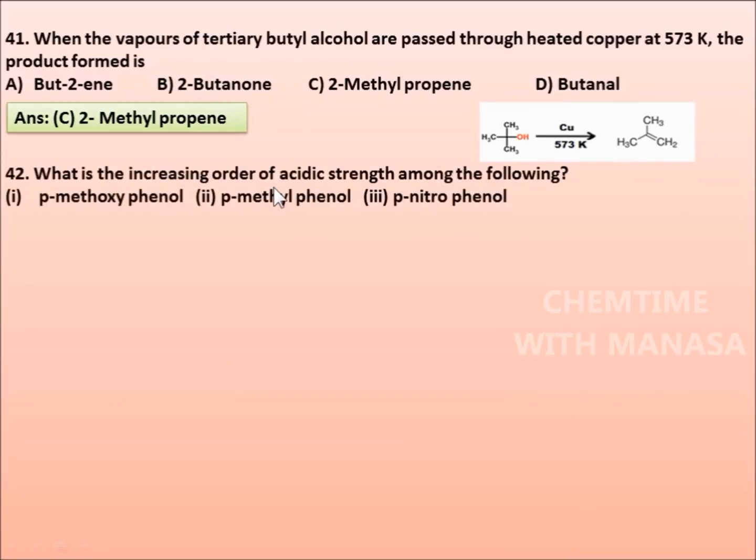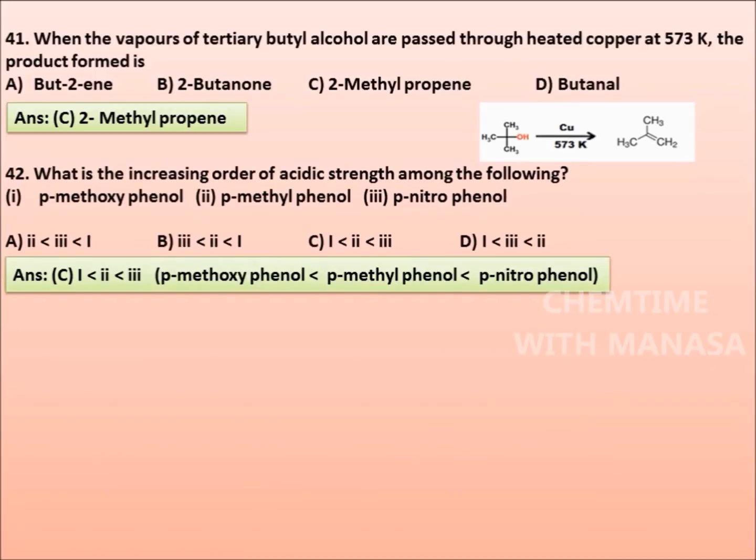Question number 42: What is the increasing order of acidic strength among the following: p-methoxyphenol, p-methylphenol, p-nitrophenol. Options are 2 less than 3 less than 1, 3 less than 2 less than 1, 1 less than 2 less than 3, 1 less than 3 less than 2.